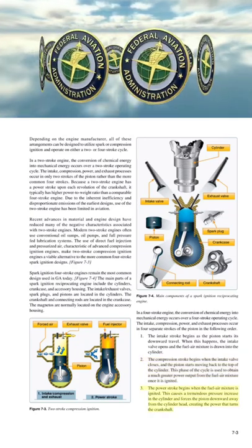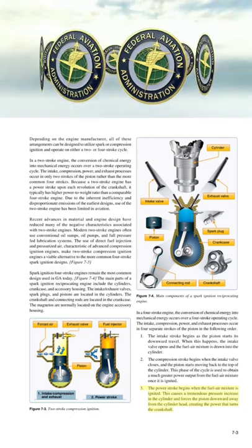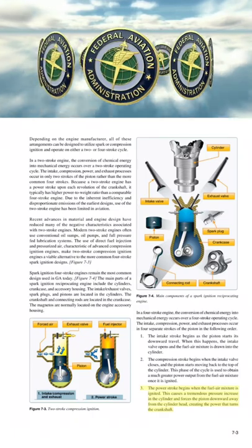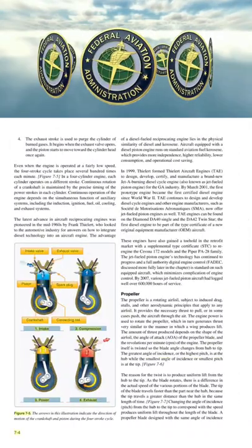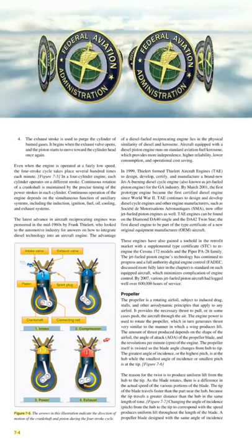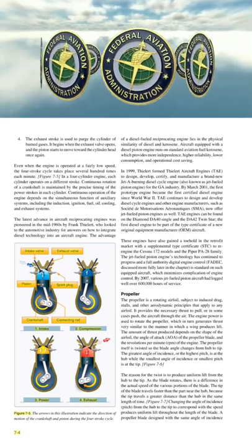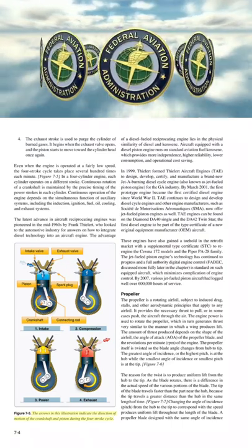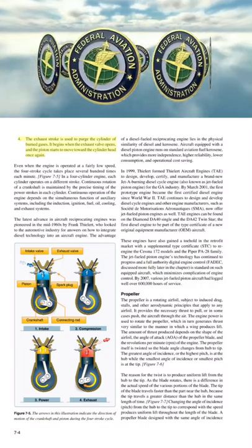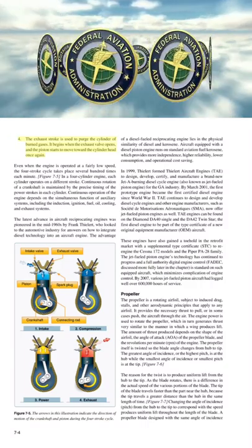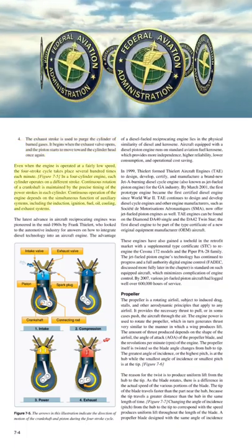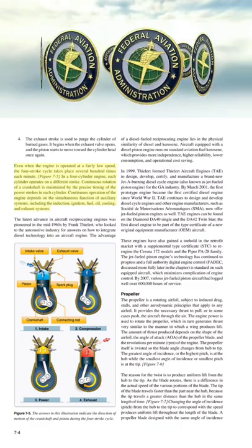The power stroke begins when the fuel-air mixture is ignited. This causes a tremendous pressure increase in the cylinder and forces the piston downward away from the cylinder head, creating the power that turns the crankshaft. The exhaust stroke is used to purge the cylinder of burned gases; it begins when the exhaust valve opens and the piston starts to move toward the cylinder head once again. Even when the engine is operated at a fairly low speed, the four-stroke cycle takes place several hundred times each minute.